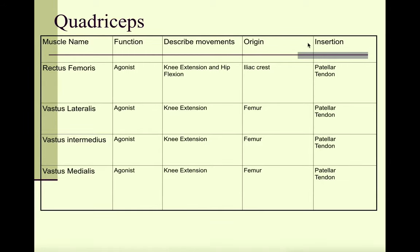Let's look at the origin and insertion of the various quadriceps muscles. With the exception of the rectus femoris, all of the quadriceps muscles have their origin at the femur — that is the vastus lateralis, the vastus intermedius, and the vastus medialis. The rectus femoris on the other hand has its origin at the iliac crest. All of these quadriceps muscles are going to directly insert on the patella or the patellar tendon.